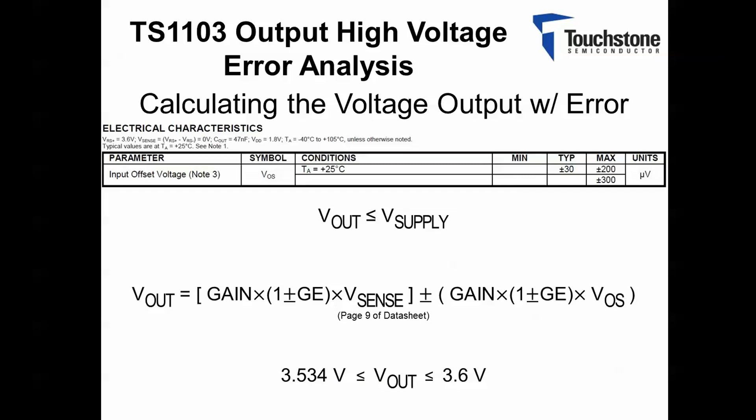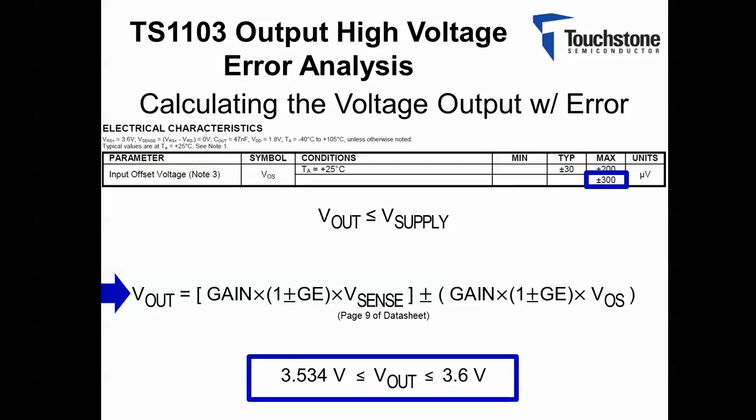Here I have calculated the absolute voltage output with the error. Again, I have considered the maximum range for the input offset voltage across temperature. Highlighted is the voltage output equation to solve for. This results in the given range across temperature for the absolute voltage output.